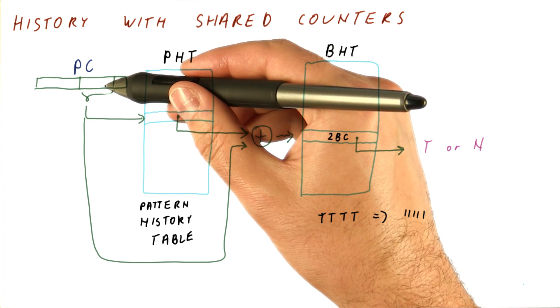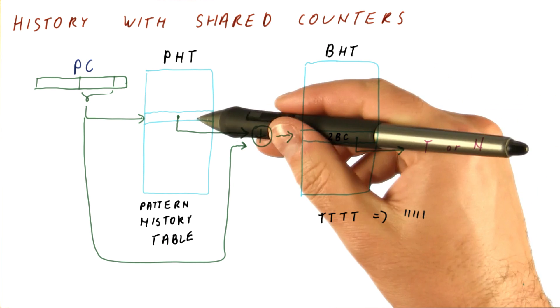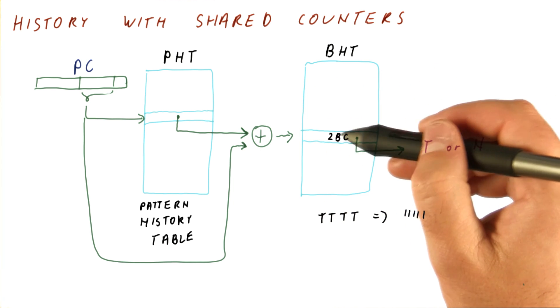That branch has a fixed PC, it always has the same history. When we XOR them, we will be using only one two-bit counter.